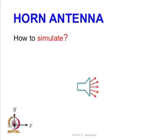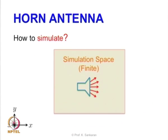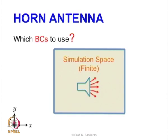The first problem we are interested in is simulating a horn antenna. A horn antenna has a certain radiation pattern, and when you want to simulate it in a two-dimensional space, you have a physical space which is infinite. Obviously we cannot simulate an infinite space — we have to have a finite simulation space, and the question is what kind of boundary condition we are going to use.